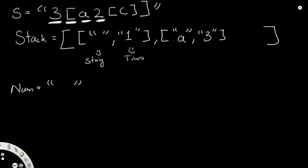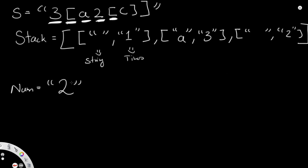Now we have '2', another number, so we add it to 'num'. Then we have another opening bracket, so we push a new element onto the stack with an empty string and the number 2. After pushing, 'num' gets reset again. Then we encounter the letter 'C', which is a letter, so we add 'C' to the string portion of the last stack element.